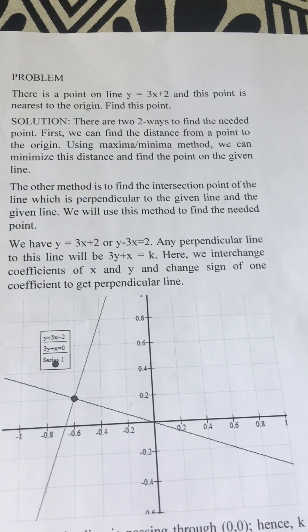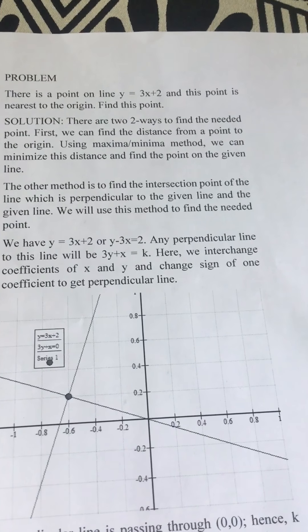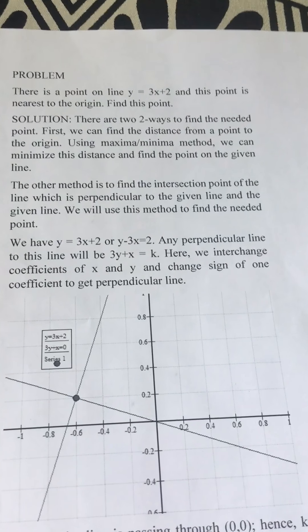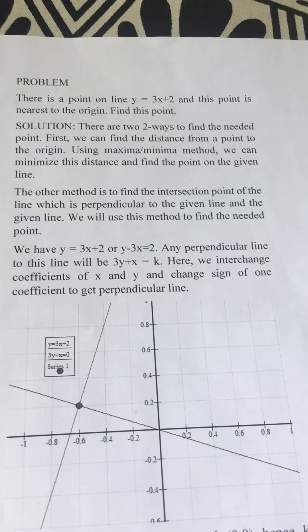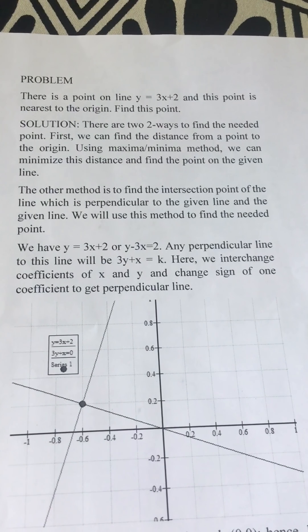Many times we are asked to find the point from which the distance to the line is minimum. We will try to solve this problem in this video and we will use one simple method. Let us say the problem is that there is a point on line y = 3x + 2 and this point is nearest to the origin. Find this point.